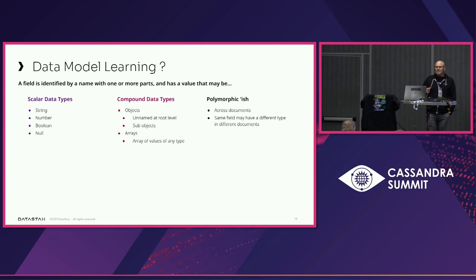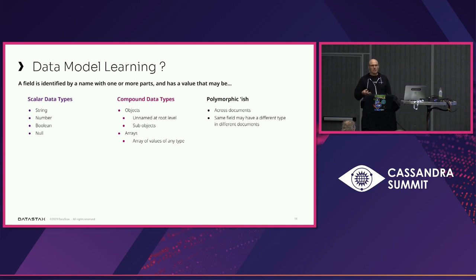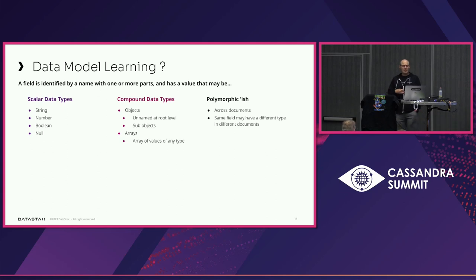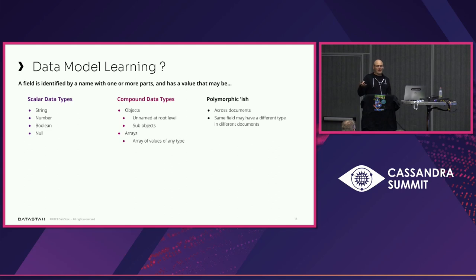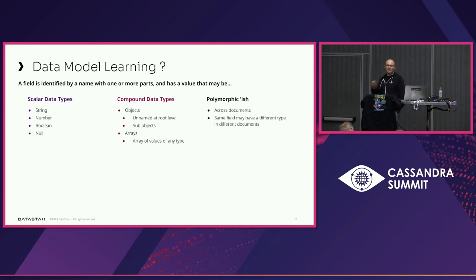So what did we learn? A document or JSON object has a number of fields identified by a name, and that name can have one or more parts — like address.suburb. Fields have data types: either scalar types including null, or compound types like objects and arrays. There's also an unnamed implicit object at the root — the document itself. And across documents, this is kind of polymorphic: the same field name address might be a string in one document and an object in another — all we know is it's of type 'value.'